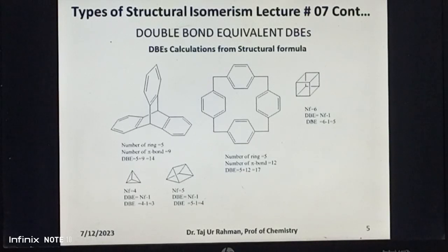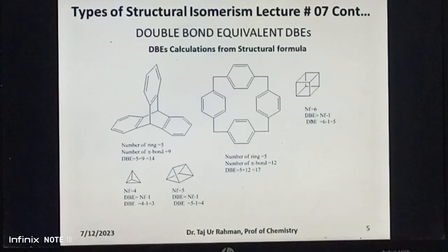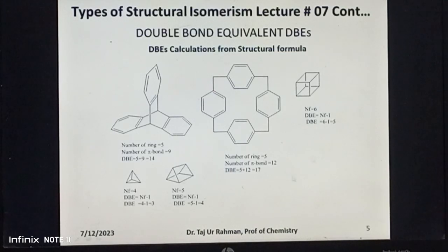In addition to this, double bond equivalent DBE can also be calculated for cubane and cubane-like compounds. In such compounds, DBE can be calculated by counting the total number of faces in a structure and subtracting one. Cubane has a total of six faces, so its DBE value is calculated using the formula DBE = nf minus one, giving DBE = 6 - 1 = 5. So its DBE value is five. The same calculations can be carried out for these types of compounds to calculate their DBE values.